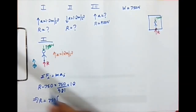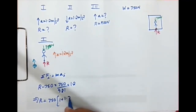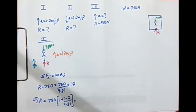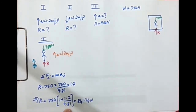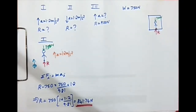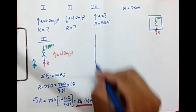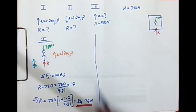Solving for R: R = 750 × (1 + 1.2/9.81), which gives R = 841.74 N. That is the answer for Case 1. The man exerts a force on the floor greater than his own weight of 750 N when the lift accelerates upward.